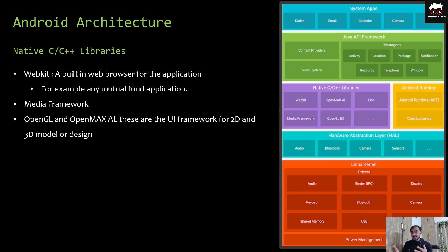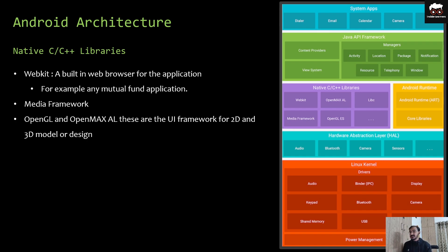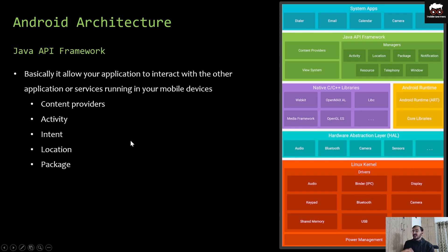Coming to our next layer — Native C/C++ Libraries. This includes some functions and services under C/C++ libraries. The first is WebKit, which is a built-in web browser for applications. For example, mutual fund applications use built-in web browser functionality to import web application content into the mobile app. The second is the Media Framework, and the third is OpenGL and OpenMAX, which are UI frameworks for 2D and 3D models or designs.